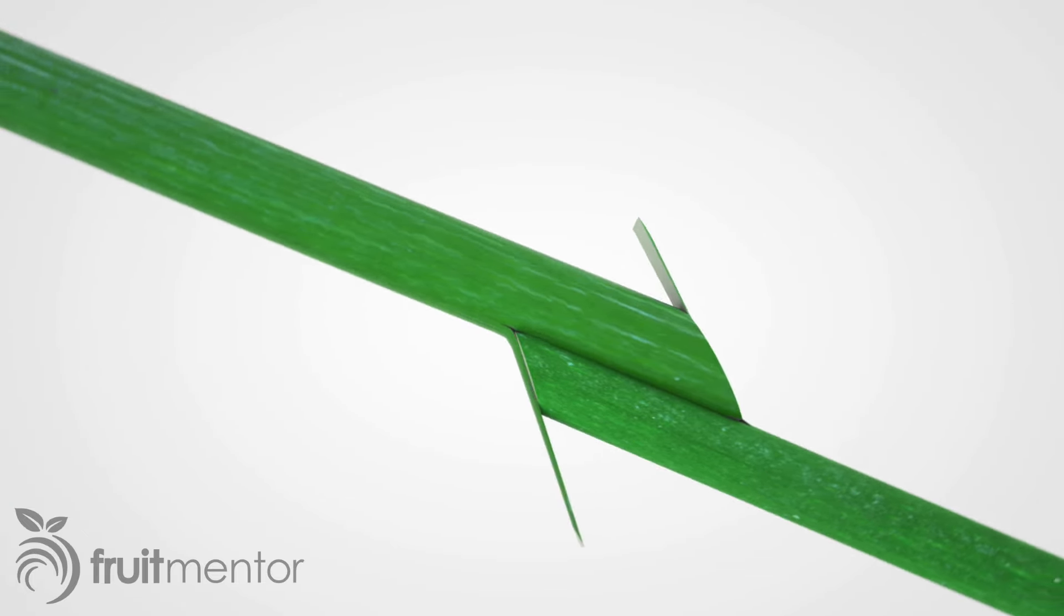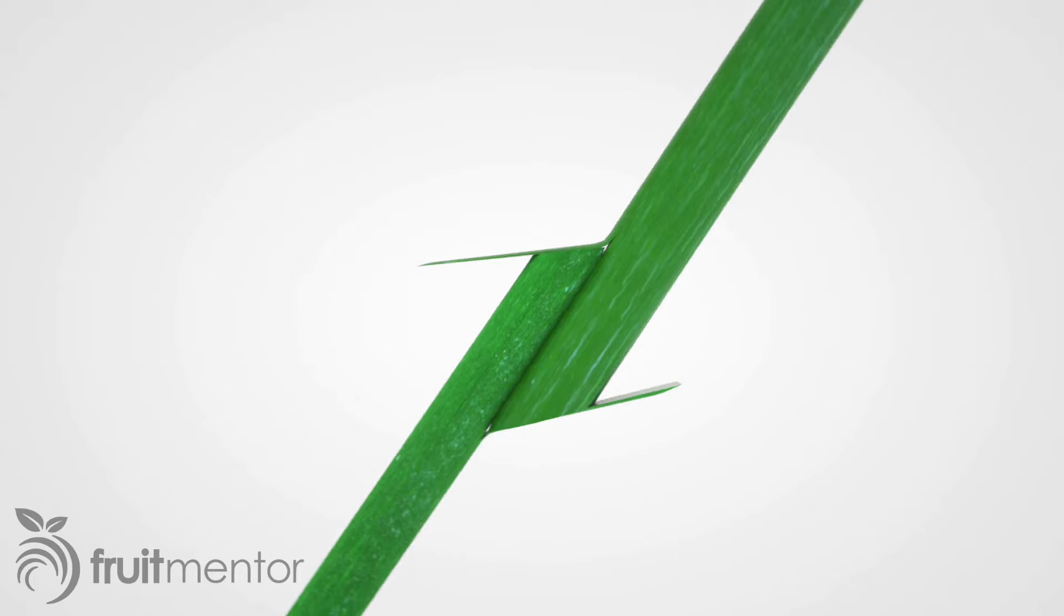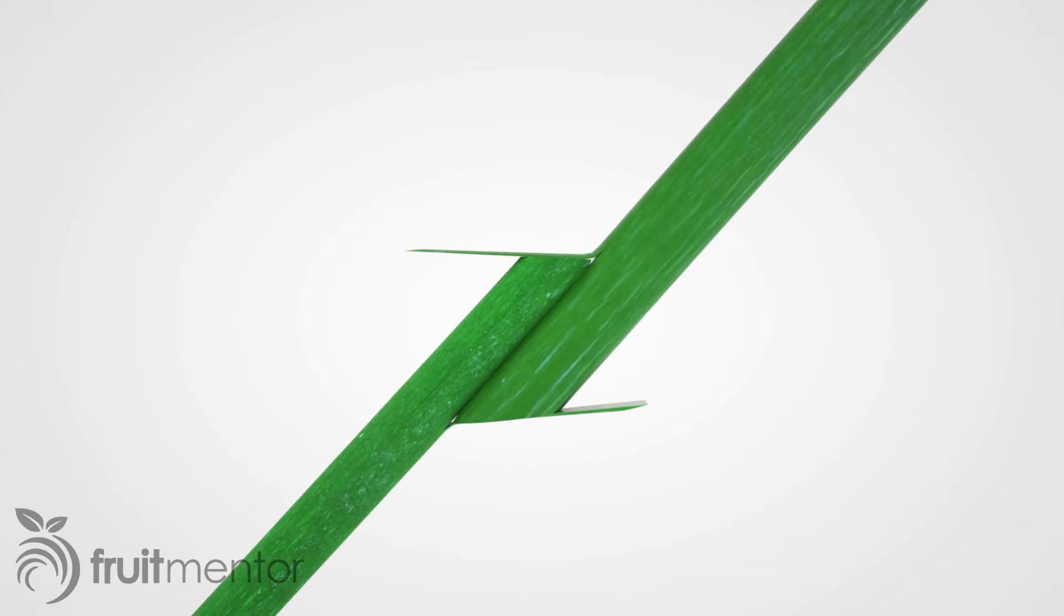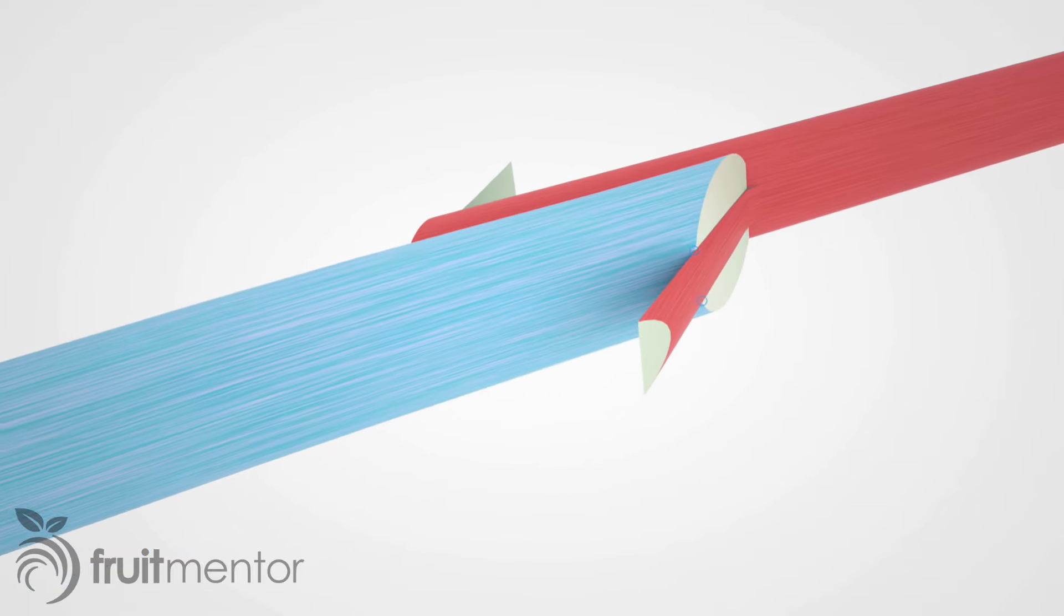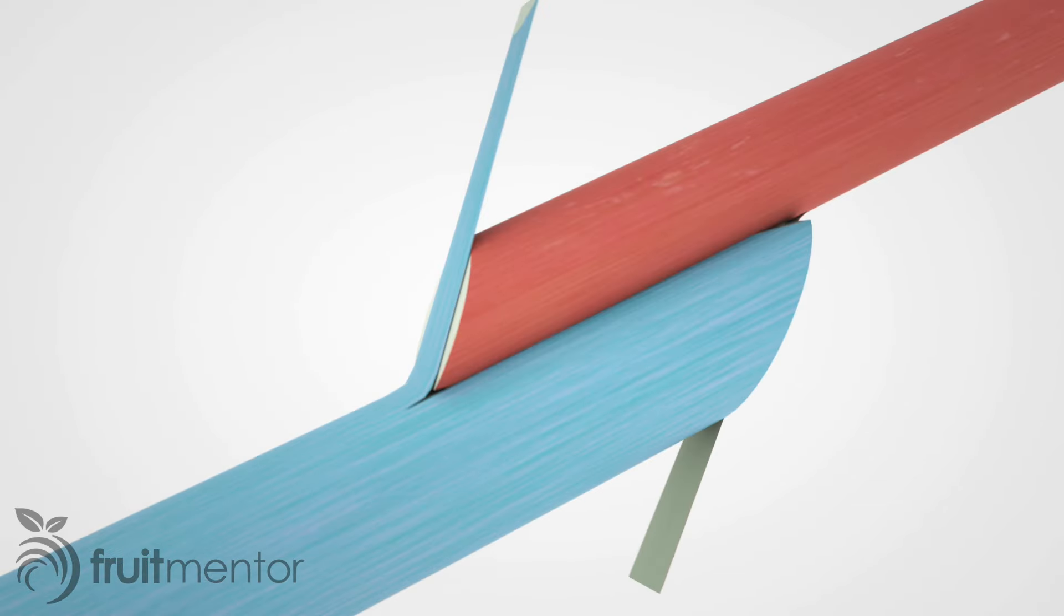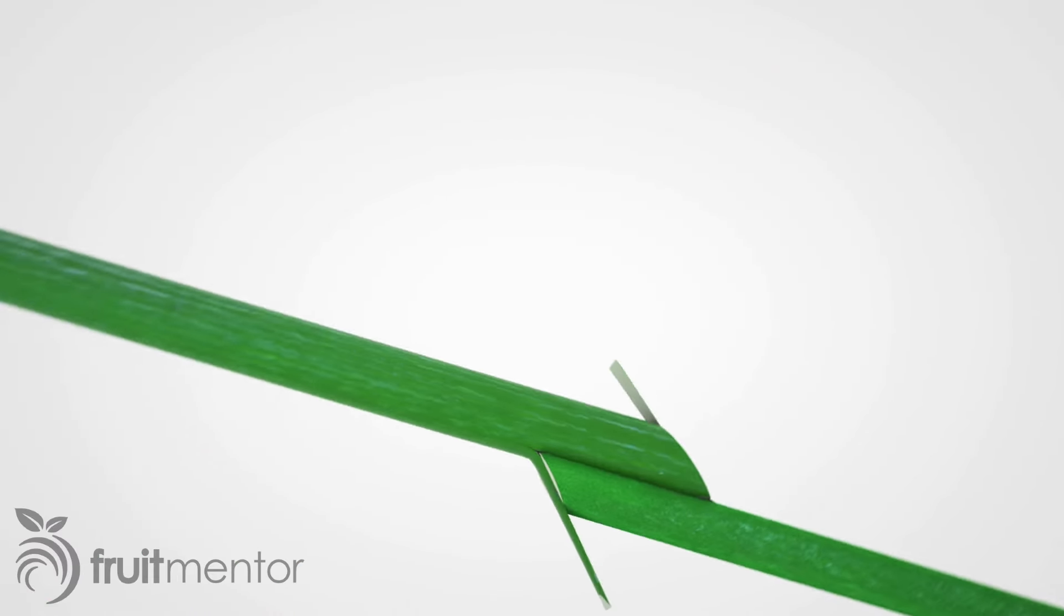Next, the scion is inserted into the rootstock forming a Z-shape. The Z-graft creates many points of contact between the cambium of the scion and the cambium of the rootstock. This makes for a successful graft and a strong graft union.